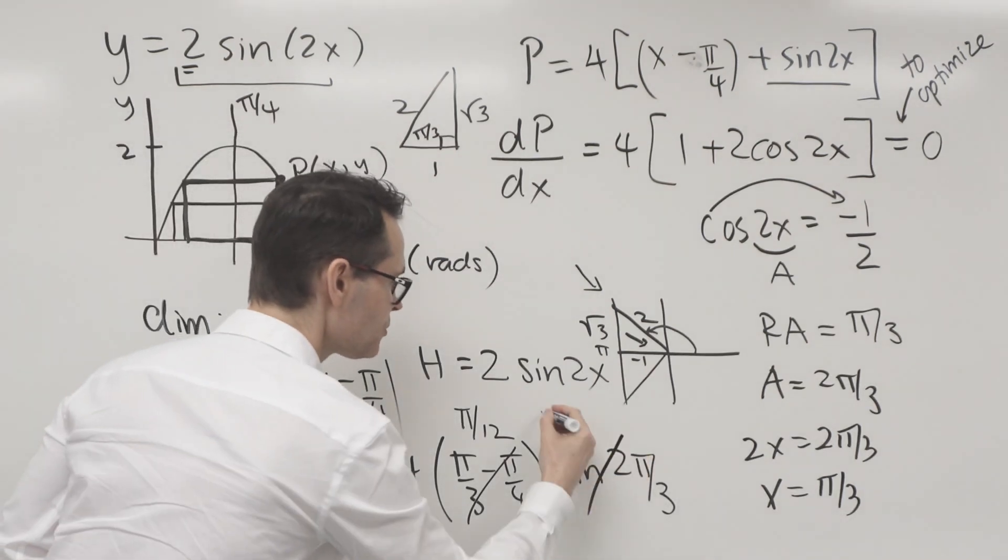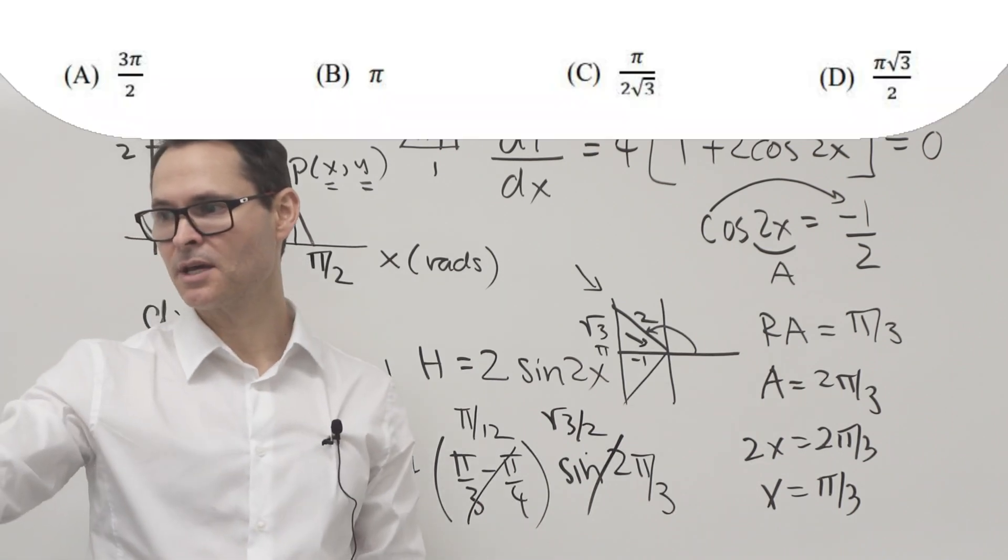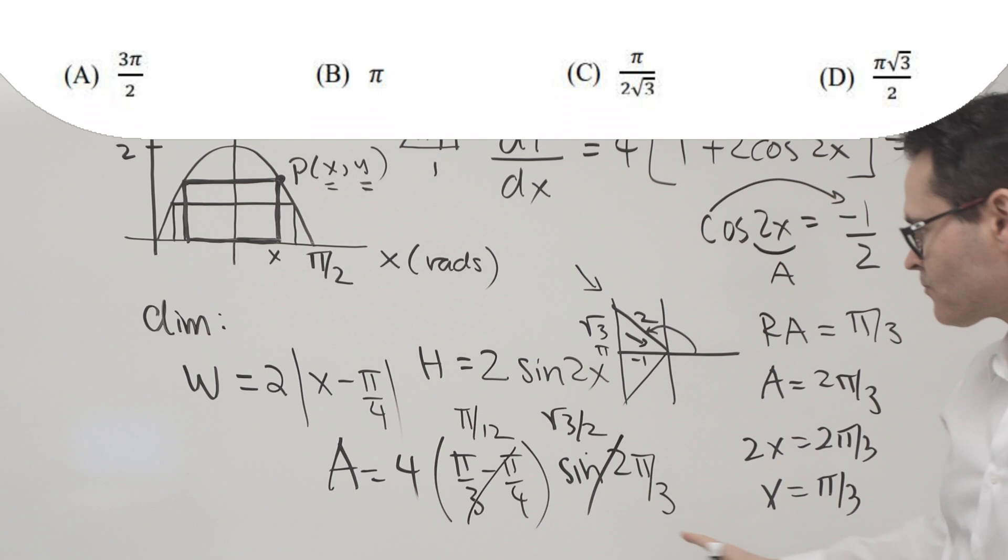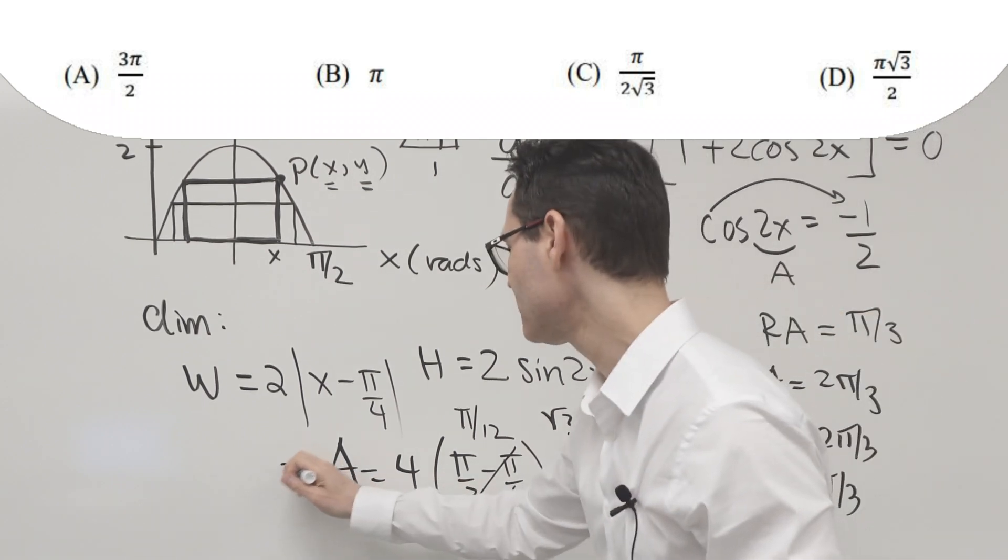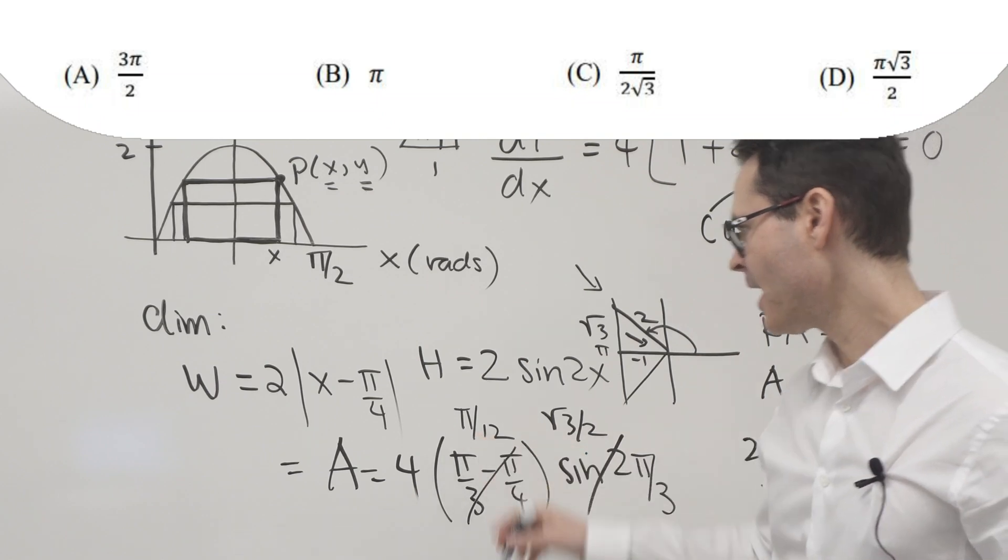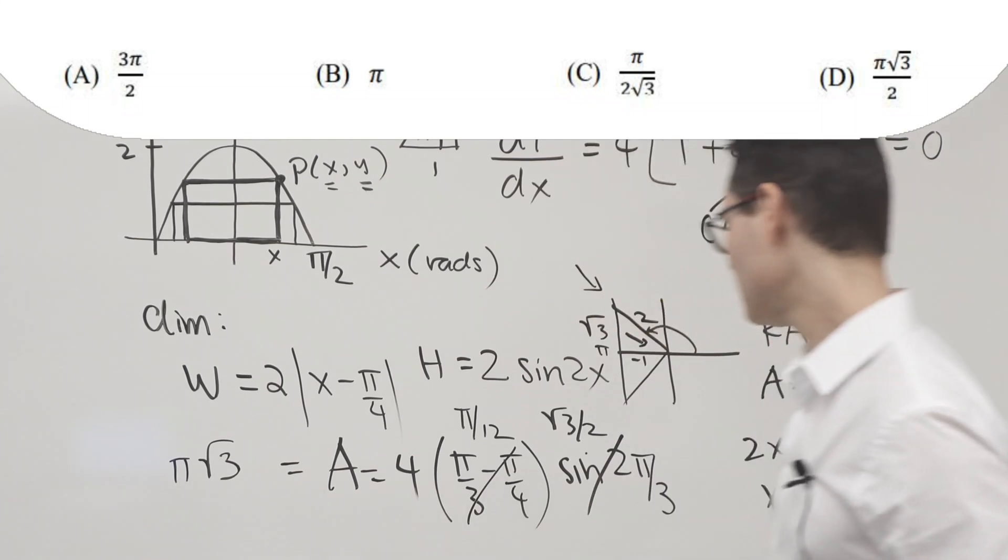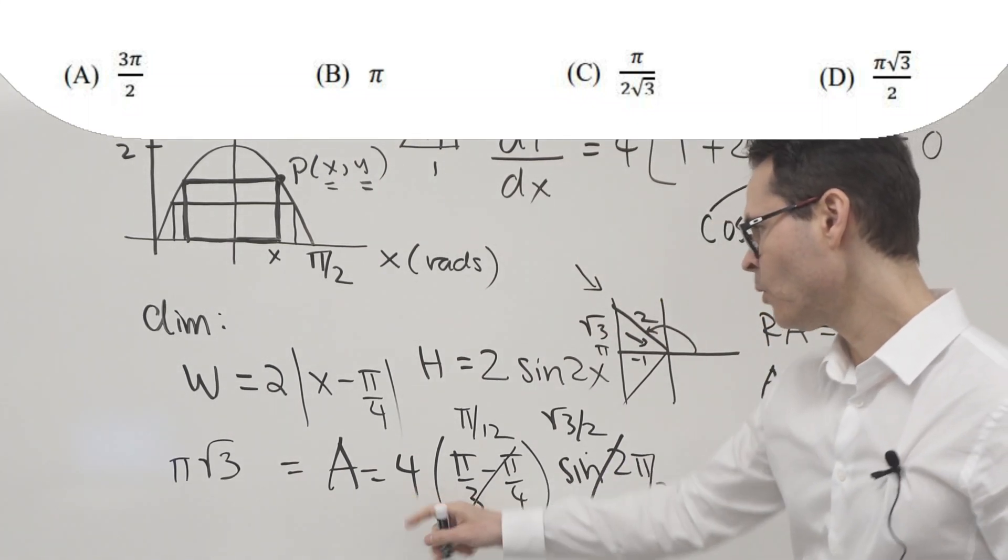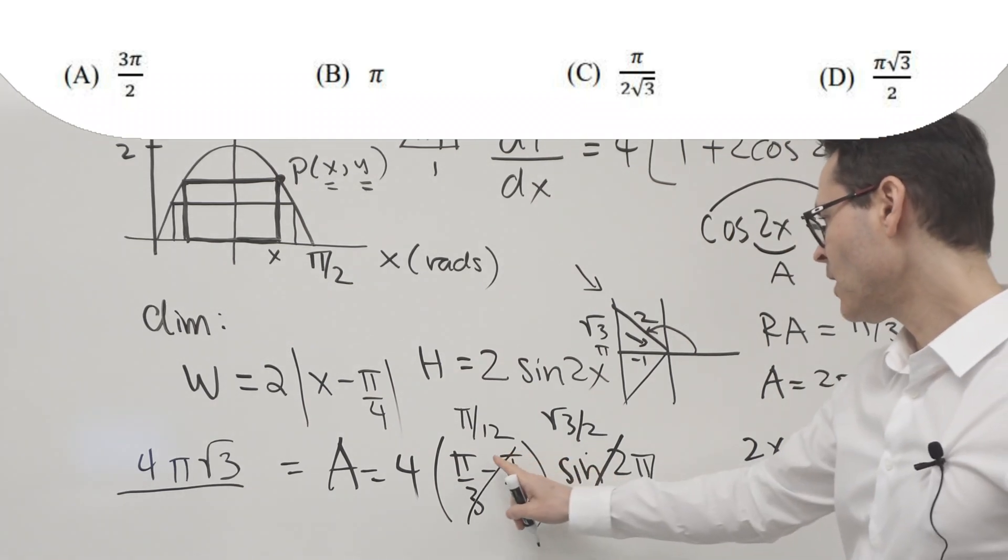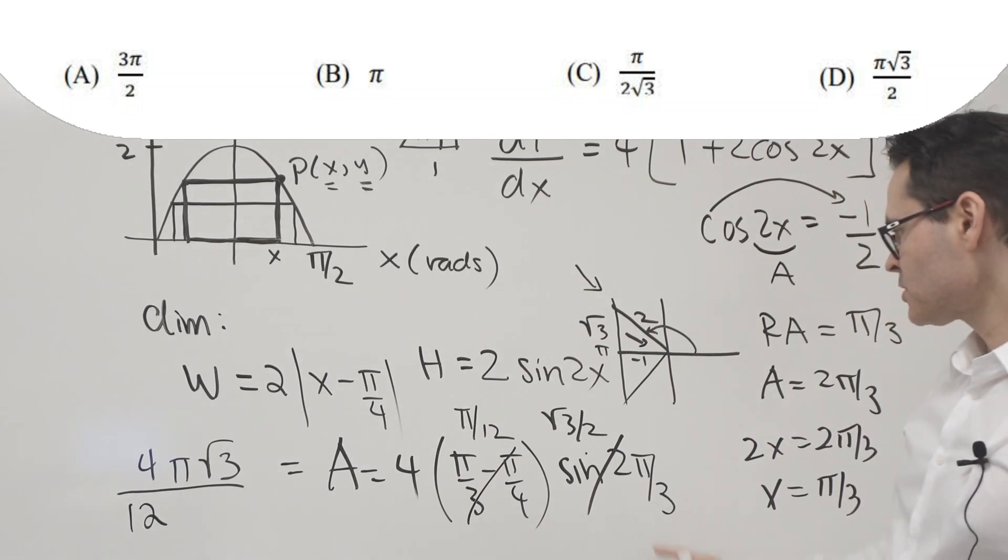So this here becomes root three over two. Now when I analyze the answers, I need to make a little adjusting here. So I've got root three, and I've got pi, pi, and root three. And I've got a four as well, I'll put the four there. Down below I've got a twelve and I also have a two.